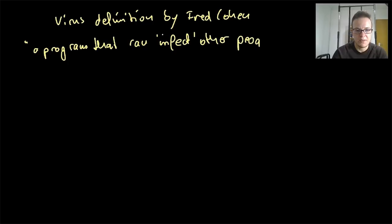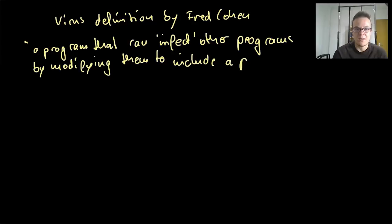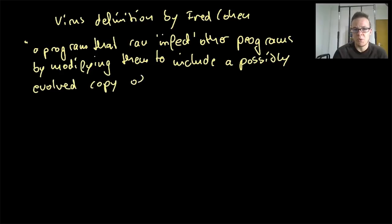Fred Cohen made his paper in 1984 and he created a definition for a computer virus first — it was not such a common thing back then. He said a computer virus is a program that can infect other programs by modifying them to include a possibly evolved copy of itself.